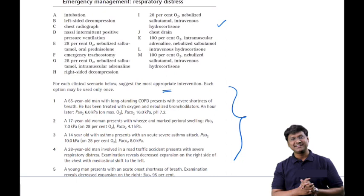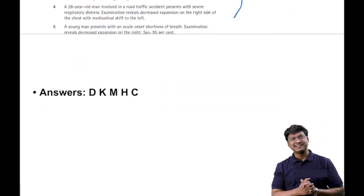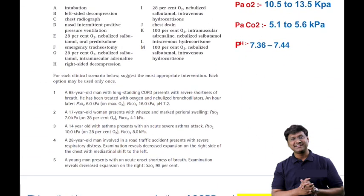First scenario: a 65-year-old man with long-standing COPD presents with severe shortness of breath. He has been treated with oxygen and nebulized bronchodilators. An hour later, the partial pressure of oxygen is 6 kilopascals, partial pressure of carbon dioxide is 16 kilopascals, and pH is 7.2. What is the intervention you will do in this individual?